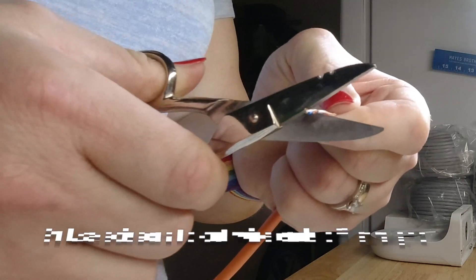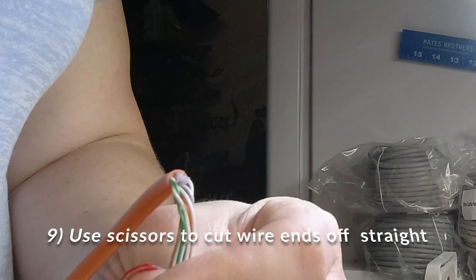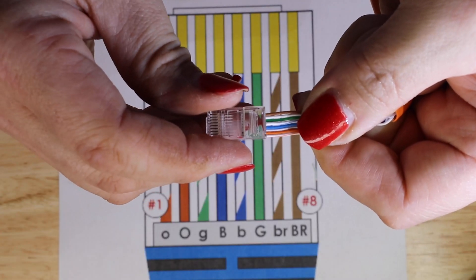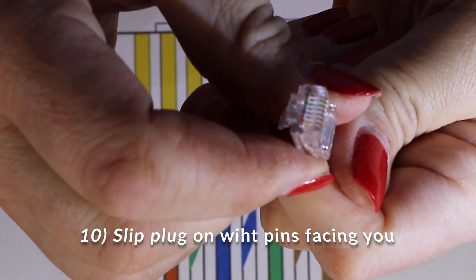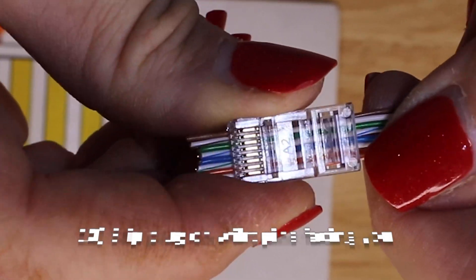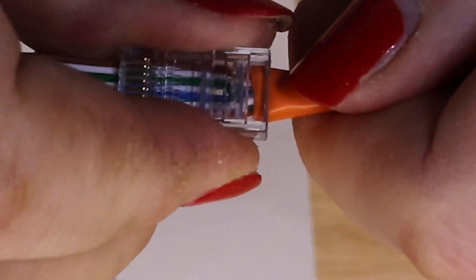After that, you want to take your same pair of scissors and go ahead and clip a straight edge off on all eight wires before you start slipping that plug on with the pins facing you. You can see as I slip this on that I'm pushing the wires all the way through the jack out to the other end, and then I'm pushing the sheath of the cable inside the plug itself just a little bit.